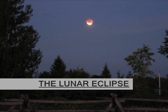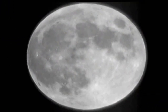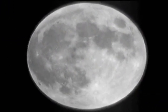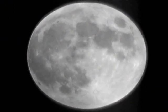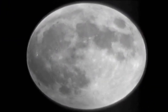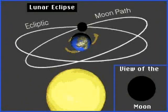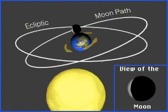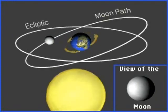A lunar eclipse occurs at full moon when the moon passes through the shadow of the Earth. Since the moon has no light of its own, you see the moon gradually darken as it creeps into the Earth's shadow.